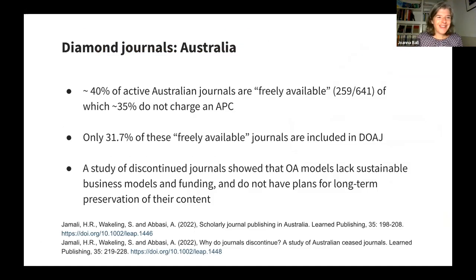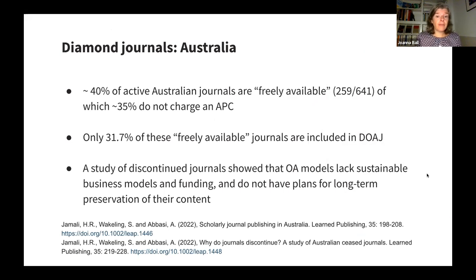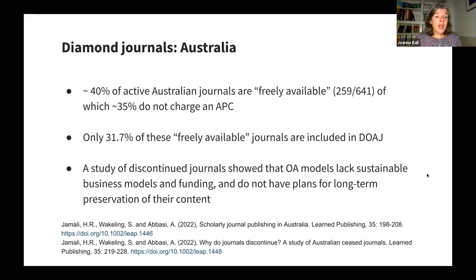Taking a look at diamond journals in Australia: 40% of active Australian journals are freely available, though that doesn't necessarily mean they're open access. Only around 32% of those freely available journals are listed within DOAJ. Another study showed that open access models are vulnerable, lacking sustainable business models and funding, and without plans for long-term preservation of content. So there is a need to provide additional support for this type of journal.